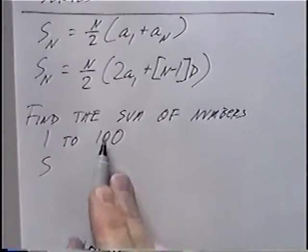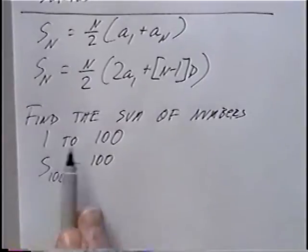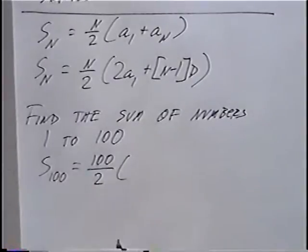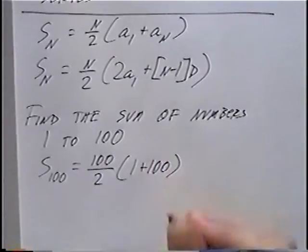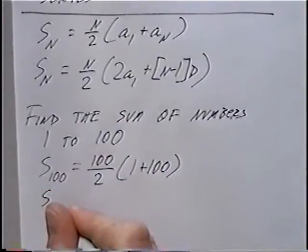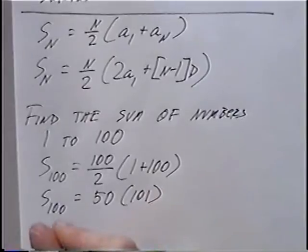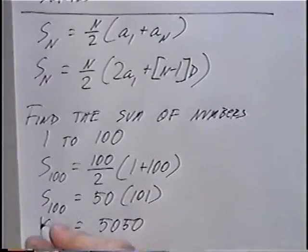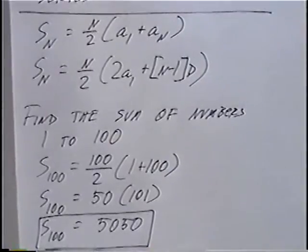S sub 100 — because there are 100 terms — equals 100 over 2 times the quantity a sub 1 plus a sub n. A sub 1 is 1 and a sub n is 100. So S sub 100 equals 50 times 101, which equals 5050. Summing all the numbers from 1 to 100 adds up to 5050.